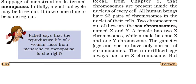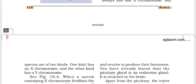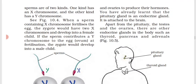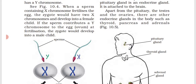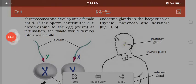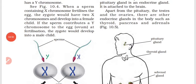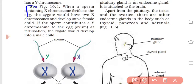Since the female only has X chromosomes, the egg will 100% always carry an X chromosome — there is no Y chromosome in the female, so we are confirmed that the egg will carry only X. The male's gamete is the sperm, and since males have both X and Y chromosomes, we are not sure whether the sperm will carry X or Y.